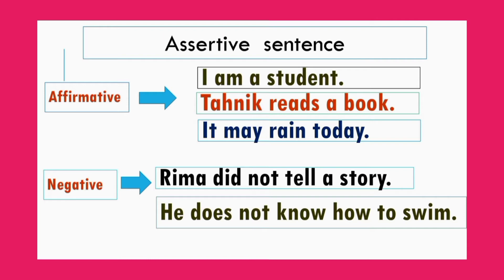Negative: a sentence that expresses a negative meaning is called a negative sentence. Such as: 'Rima did not tell a story.' 'He does not know how to swim.' These are negative sentences.